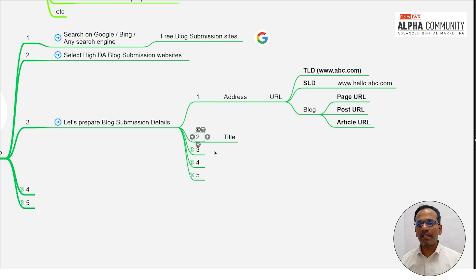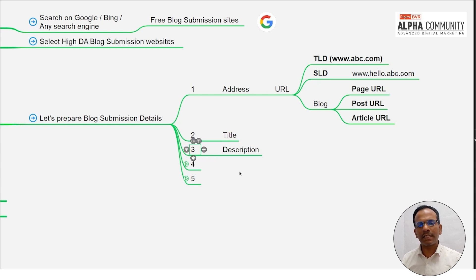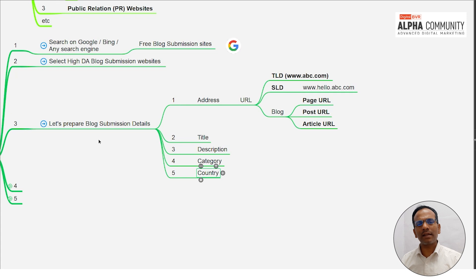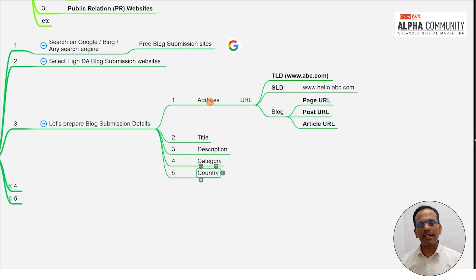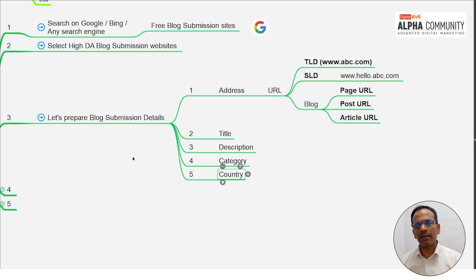The next detail is the title — the title is created. The title is the most important optimization factor for blog submission. Next is meta description — meta description is identified. Then category is selected and country is added. These are the preparation steps. For most blog submission websites, these are the fundamental and standard practice details required. One pro tip: in the blog submission setup, the title is created.